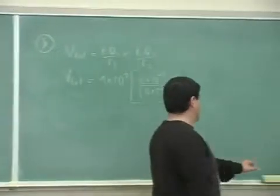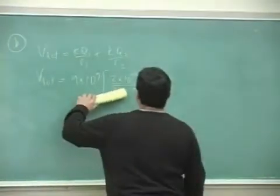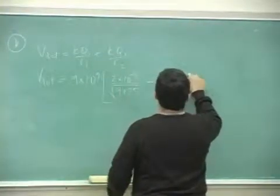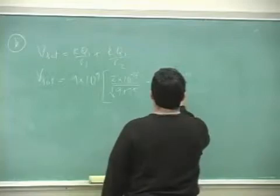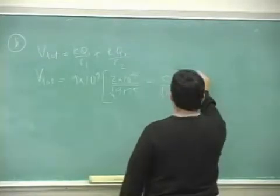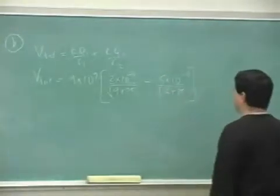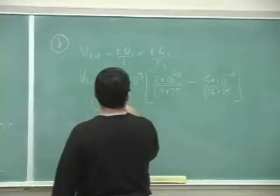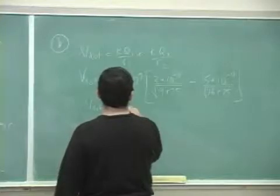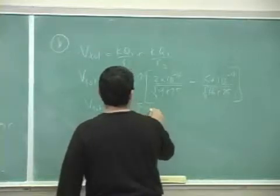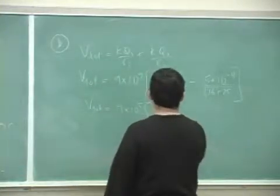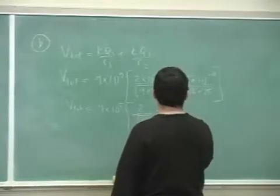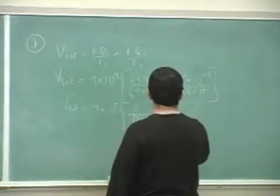So 2 square root of 25 plus 9 minus 5 times 10 to the minus 4, square root of 16 plus 25. So you get V total equals 9 times 10 to the fifth, 2 divided by square root of 34 minus 5 divided by square root of 41.